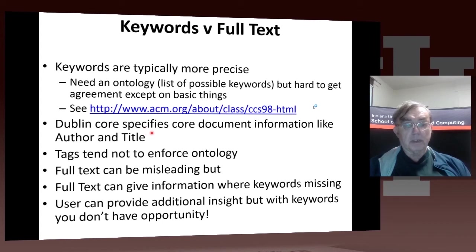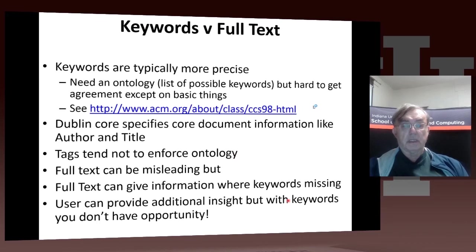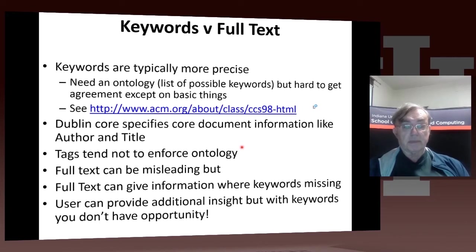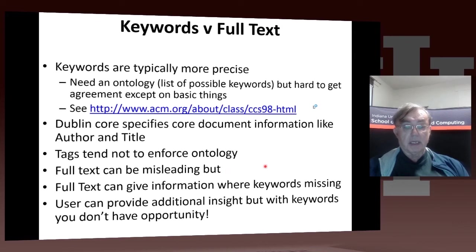There are some good ontologies — the Dublin Core specifies core document information like author and title. Another approach seen on well-known social networking sites is tags. Tags have an interesting feature: they tend not to enforce ontologies; they're just whatever the user wants to tag. I think that is better than keywords, and I wish current systems would switch to using tags. When you query the system, it should not insist that you spell the tag correctly, because keywords are often added by users inconsistently. Full-text is more challenging but richer, and in general has been shown to give better information than keywords.